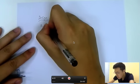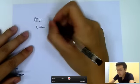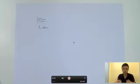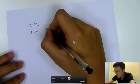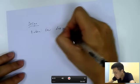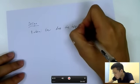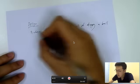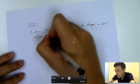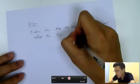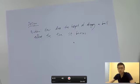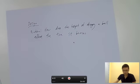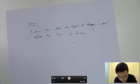In the first step you want to explain the problem. For Physics IA, phrase the problem in terms of how does X affect Y. In this case: how does the height of dropping a ball affect the time it bounces?